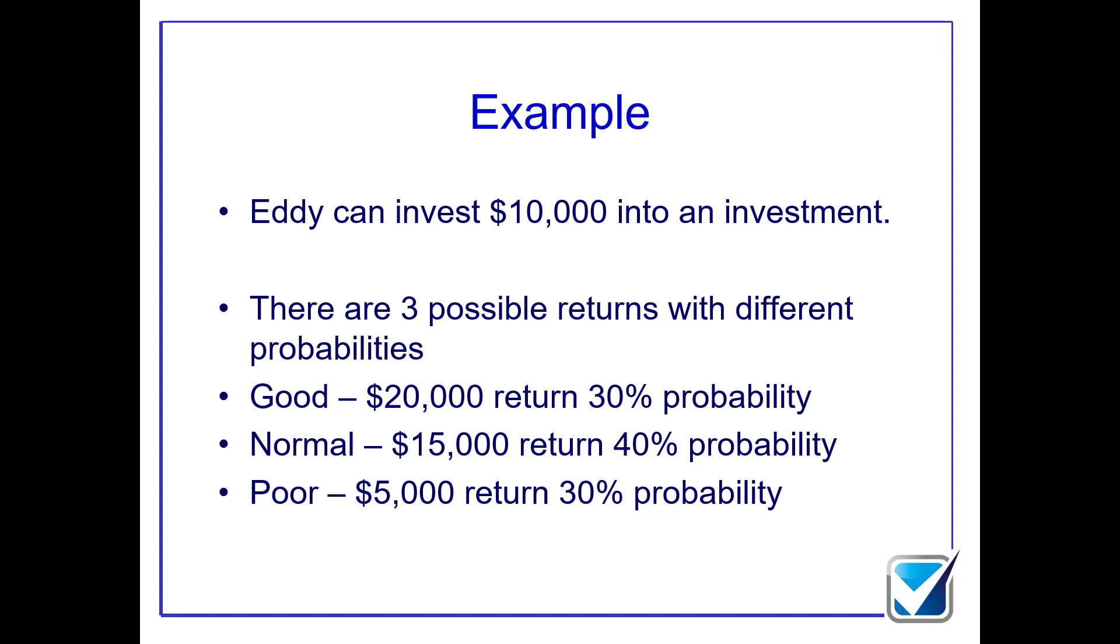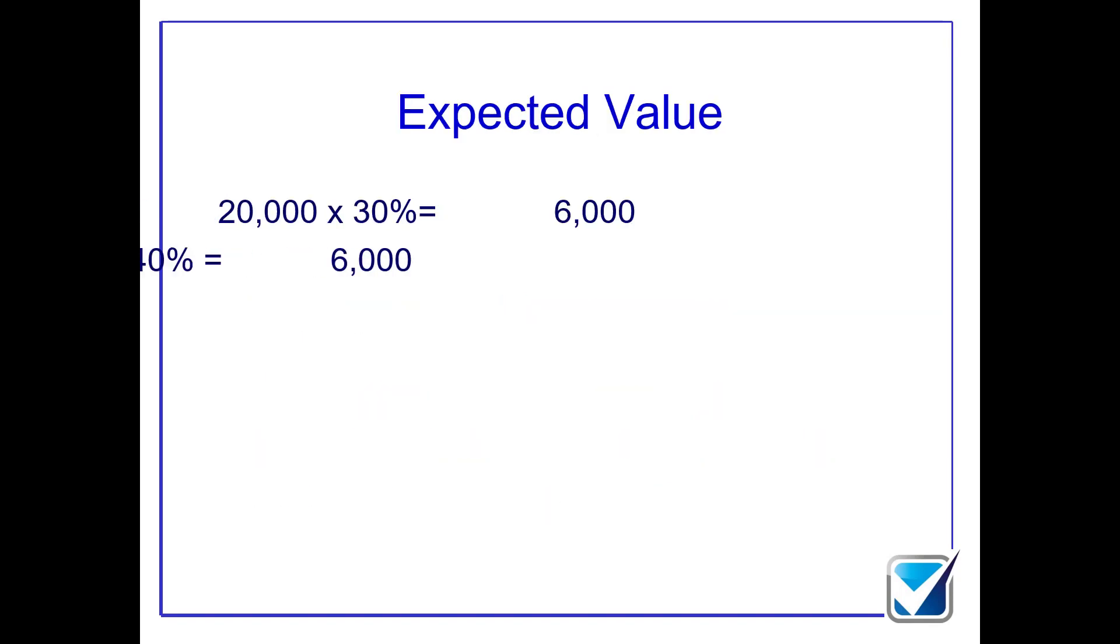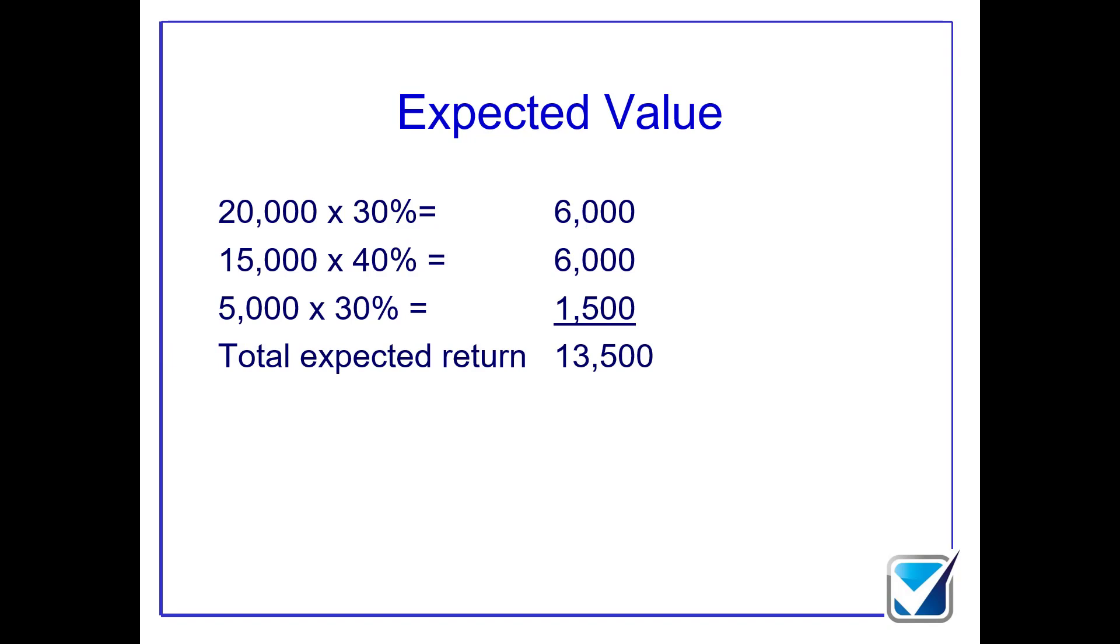I can calculate an expected value for these different amounts. I'll take 30% multiplied by $20,000, 40% by $15,000, 30% by $5,000, and add them all together. We've got the different percentage chances multiplied by the outcomes, which gives me an expected return of $13,500. For my investment of $10,000, this gives an overall net profit of $3,500. Brilliant.